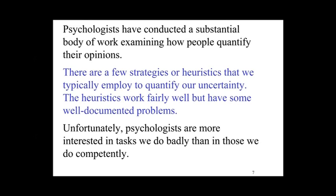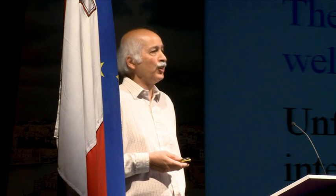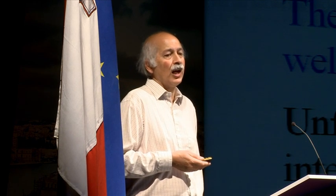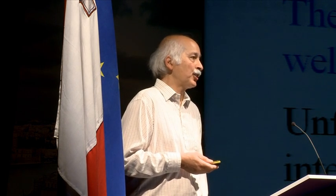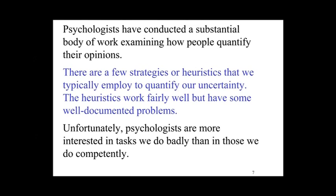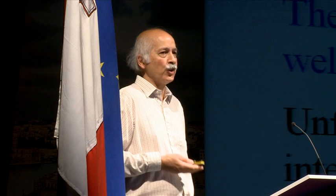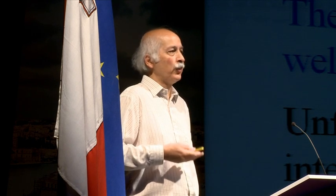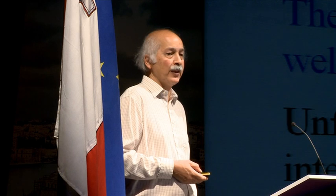I'll briefly mention psychologists' work in this area because they've done quite a lot of it. When people try to quantify their opinions, they have a number of strategies they might use, but not an enormous number. The strategies tend to work reasonably well but tend to have a few biases associated with them. A problem is that psychologists want to know what we do badly and try to understand what's going wrong, whereas from a statistician's point of view, what we really want is to find tasks that people do well so we can use those in designing methods of quantifying people's opinions.